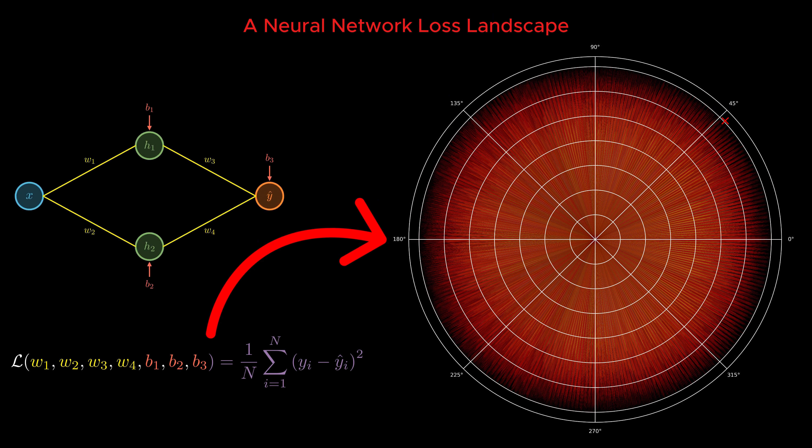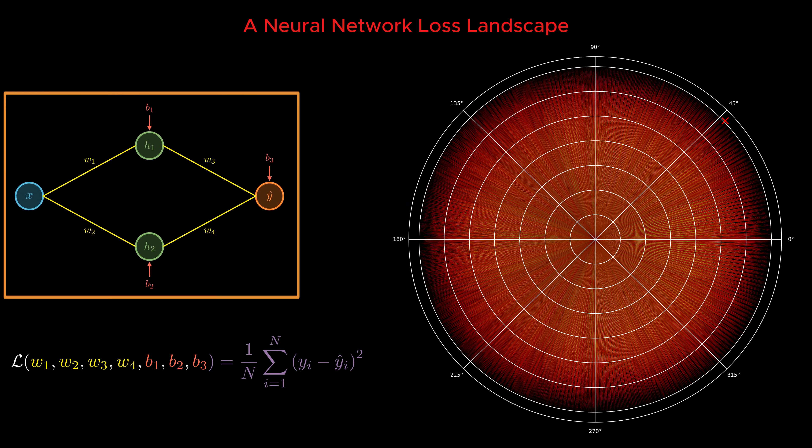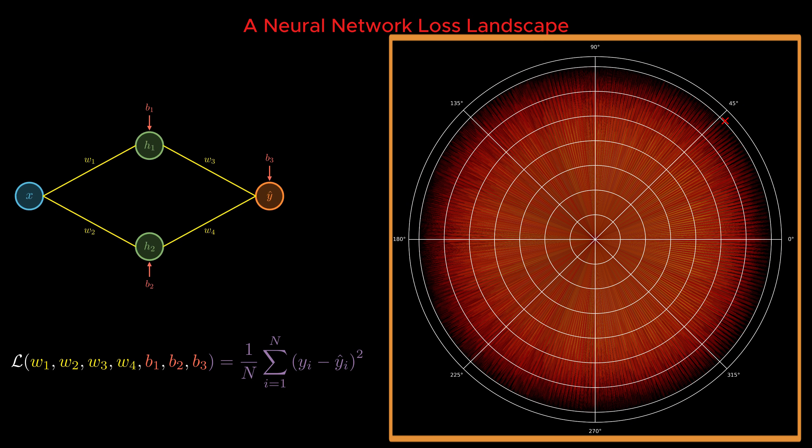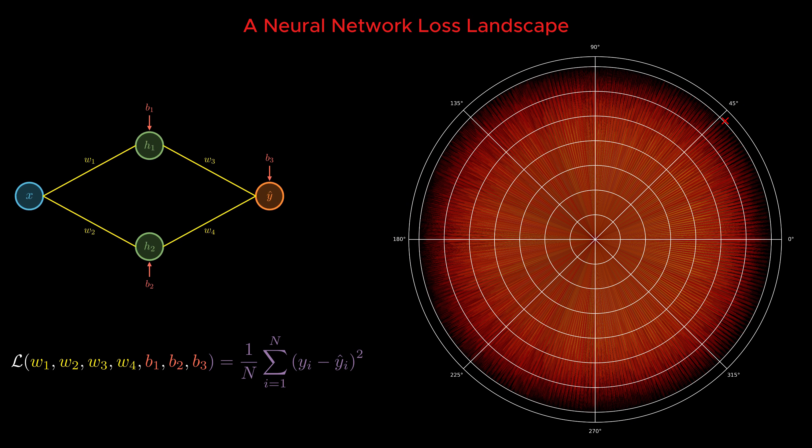When we apply the microscope to this seven-dimensional loss function, we obtain a global view of its landscape. The global minimum, now represented as a maximum, is marked with a red marker. What becomes immediately clear is that even this very simple neural network has a highly non-trivial loss landscape.